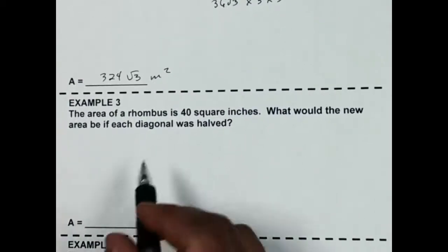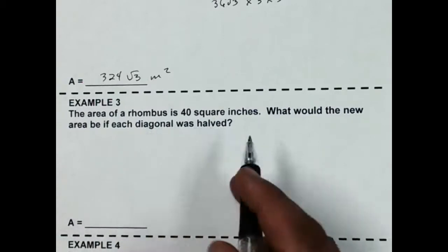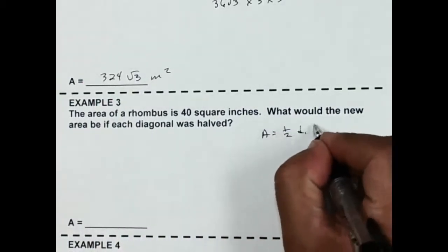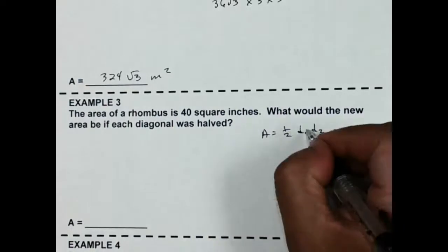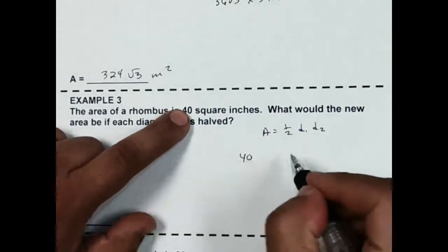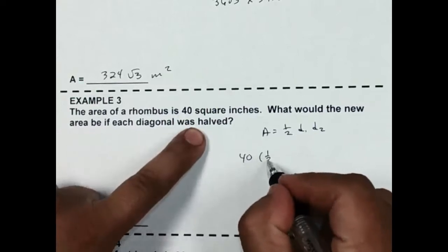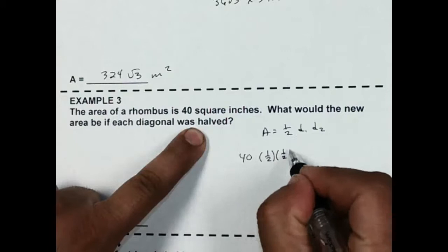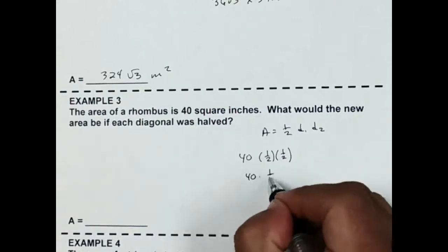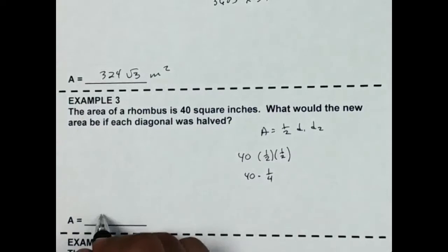The next one: the area of a rhombus is 40 square inches. What would the new area be if each diagonal was halved? The formula for a rhombus is 1 half times diagonal 1 times diagonal 2. Since the original area is 40 and I'm taking each diagonal and cutting it in half, that's 1 half times 1 half, which gives 40 times 1 fourth. That comes out to be just 10.